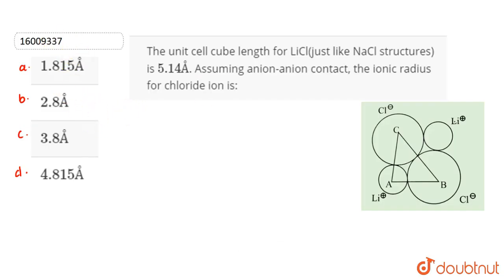So our question is, we have stated that the unit cell cube length for LiCl is equal to 5.14 angstrom. And we have to calculate, assuming anion-anion contact, the ionic radius for chloride anion.